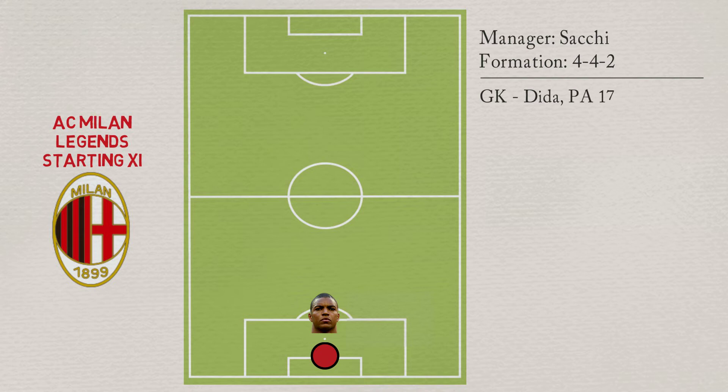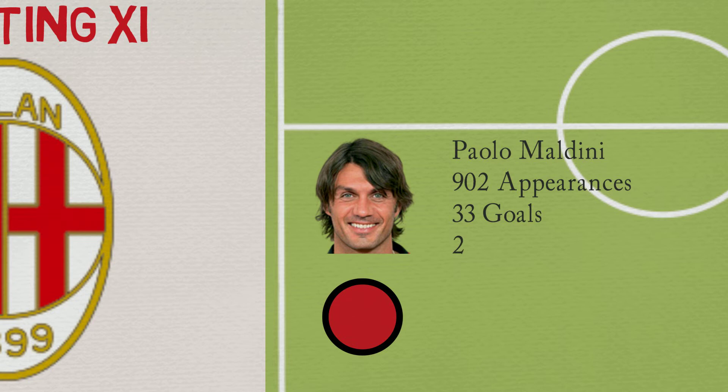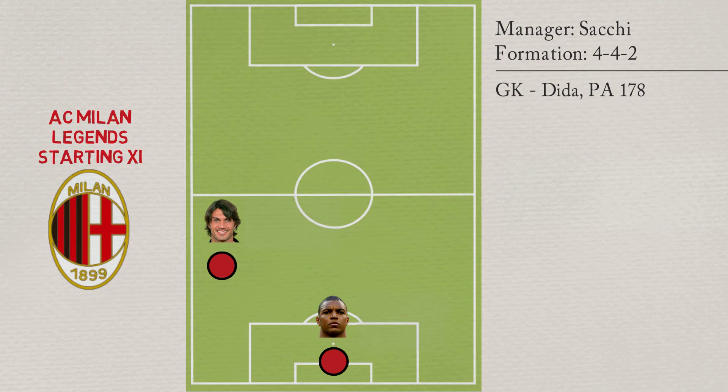As left-back, it could only be Paolo Maldini. The Italian played 902 games and scored 33 goals with Milan, winning 25 major trophies. Maldini has a potential ability of 189.